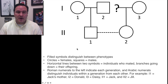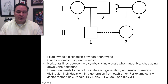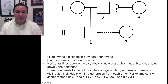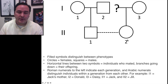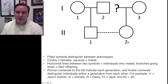In this case, row I-1 is Jack's father and Jack's mother. I-2 is Jack's father, Donald. And Jack is II-1, right here. And Jill is over here as Roman numeral II-2.